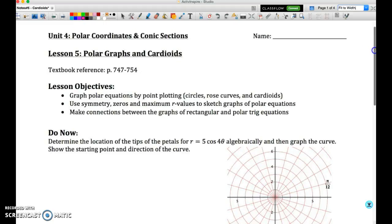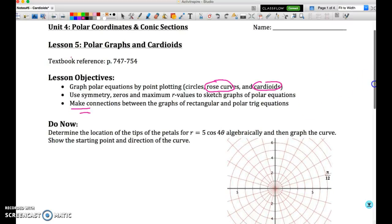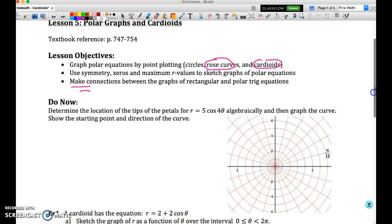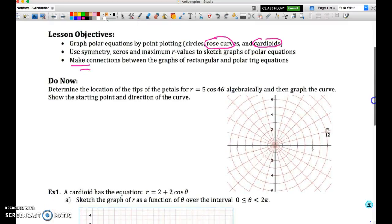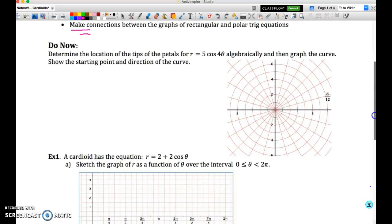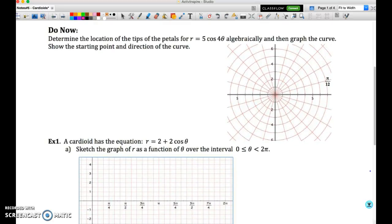Okay, welcome to the lesson on polar graphs and cardioids. This is lesson five, the final lesson of the unit. The focus for this video is primarily going to be on rose curves and cardioids, and then on the third objective, which will be to make connections between the graphs of rectangular and polar trig equations, and specifically some of those connections will be in the form of intersections. Okay, I'll try to keep this to 15 minutes, probably won't be able to because there's quite a few examples.